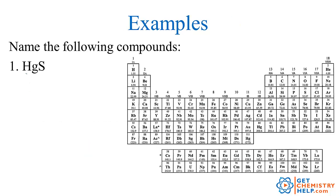Let's work through some examples. HgS: Hg is mercury. Mercury is not in group 1, not in group 2, and not in the magic triangle, so it has a variable charge. The anion comes from sulfur, which becomes sulfide (2−). We have one sulfide, so that's a total of 2−, meaning the mercury must be 2+. So this is mercury(II) sulfide.